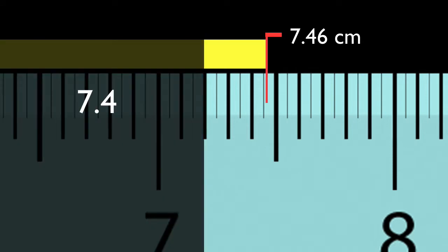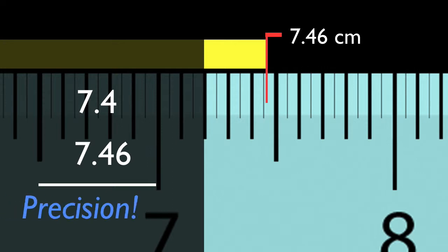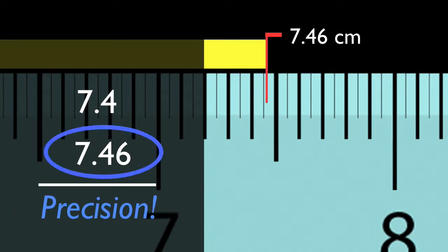What's the difference between 7.4 and 7.46? The answer is precision. The 7.46 is more precise. The expensive ruler allows for greater precision.